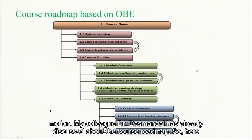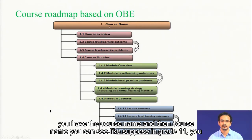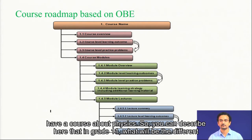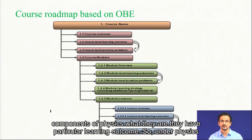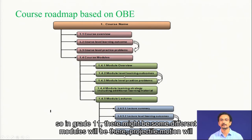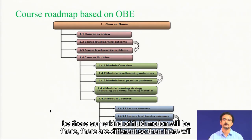My colleague Dr. Dasmandal has already discussed about the course roadmap. Here you have the course name — suppose in grade 11, you have a course about physics. You can describe what will be the different components of physics, what particular learning outcomes they have. Under physics in grade 11, there might be different modules: projectile motion, fluid motion, and others.